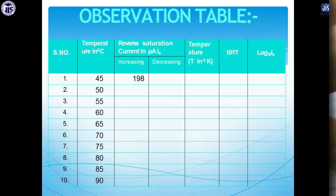This is the table for this experiment, where you have to record the temperature. Now the temperature is at 45 degrees, and the increasing current at this temperature is 198. The current is increasing because the temperature is increasing.